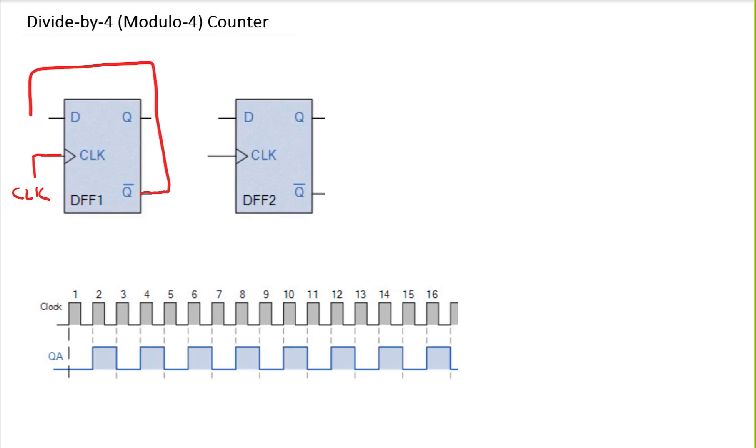What I will be doing first is take this Q-not and give it back to my D input. And I will be getting this Q and use it as a clock to my second flip-flop. This will be going to the clock of my second flip-flop. Let's say this is my Q2-not, this is my Q2, this is my Q1 and this is my Q1-not. Now we can take this Q2-not and connect it to the input of the second flip-flop.